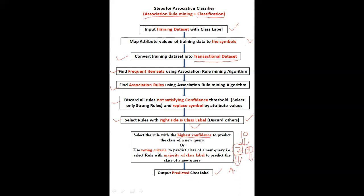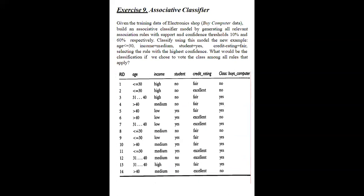We will see one example. We discuss here the same example of the buy-computer dataset — you are most familiar with this dataset. This is my training dataset. The problem statement says: given the training dataset of an electronic shop store (the buy-computer dataset), build an associative classifier model by generating all the relevant association rules with support and confidence thresholds.